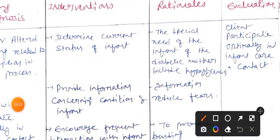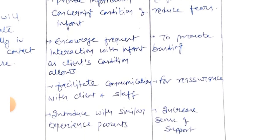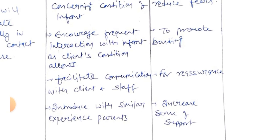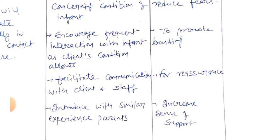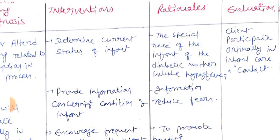Interventions and rationale for diagnosis four: First, determine current stress of infant — rationale: special needs of the infant of a diabetic mother include hypoglycemia. Next, provide information concerning the condition of the infant — rationale: information reduces fear. Increase frequent interaction with the infant as the client's condition allows to promote bonding. Facilitate communication for reassurance. Introduce client to parents with similar experience — rationale: increases sense of support.